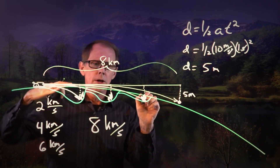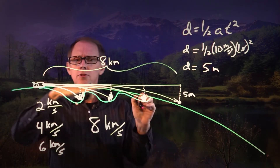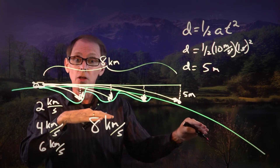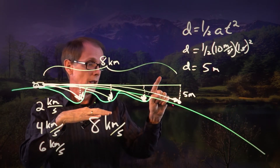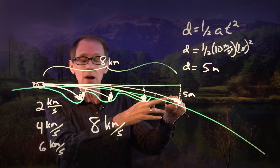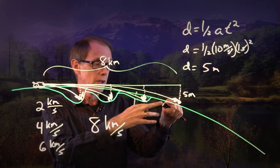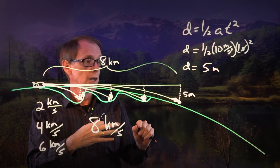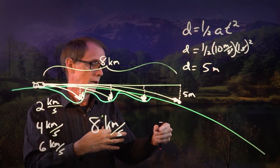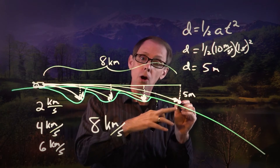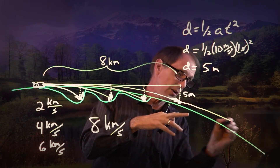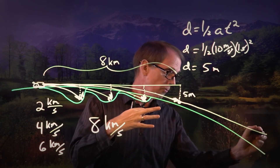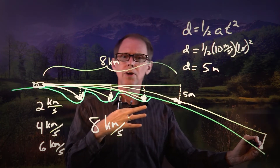The curvature of its trajectory matches the curvature of the Earth. And it hasn't touched the ground — it missed the ground. Is it falling? Absolutely. It fell five meters after one second. What about the next second? Because it missed the ground, it's going to keep on going. But gravity doesn't take a holiday — it's going to fall by five meters. It missed the ground again!